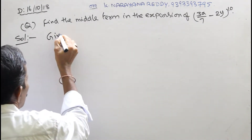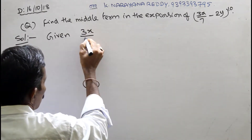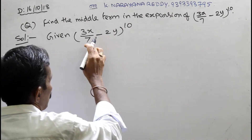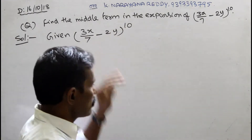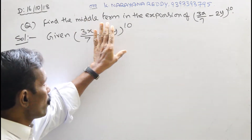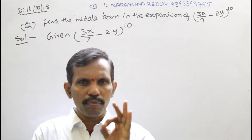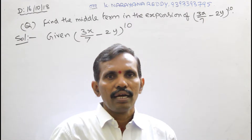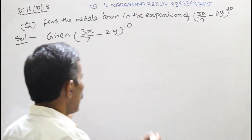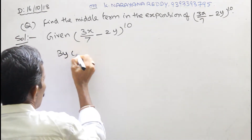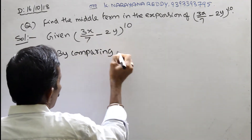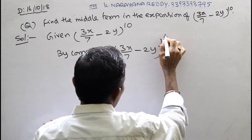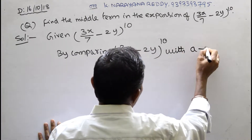Solution. Given: (3x/7 − 2y) to the power of 10. In the expansion of this, we are going to apply the binomial theorem formula. There is one formula: if n is even, the middle term is the (n/2 + 1)th term. By comparing (3x/7 − 2y)^10 with (a − b)^n, we identify the values.